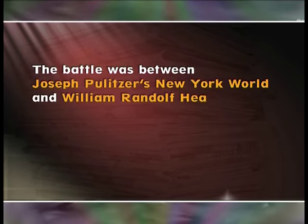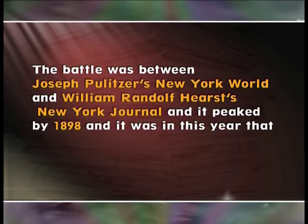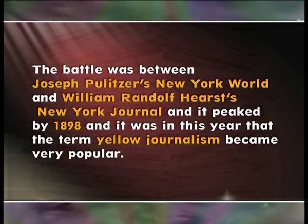Yellow journalism finds its roots in the circulation battles between two powerful media barons in 19th-century America — the battle between Joseph Pulitzer's New York World and William Randolph Hearst's New York Journal — peaking by 1898, the year the term yellow journalism became very popular. The term was coined by Erwin Wardman of the New York Press, referring to a comic strip called the 'Yellow Kid' that ran in both competing newspapers. Yellow journalism was the forerunner of tabloids and tabloid journalism, which thrived on sensationalizing and trivializing news, and is also the forerunner of infotainment being churned out by news channels today.